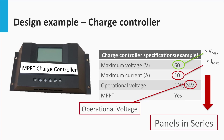In general, given a choice between series and parallel, the series configuration is preferred to keep the current levels down, thereby minimizing the DC cable loss.